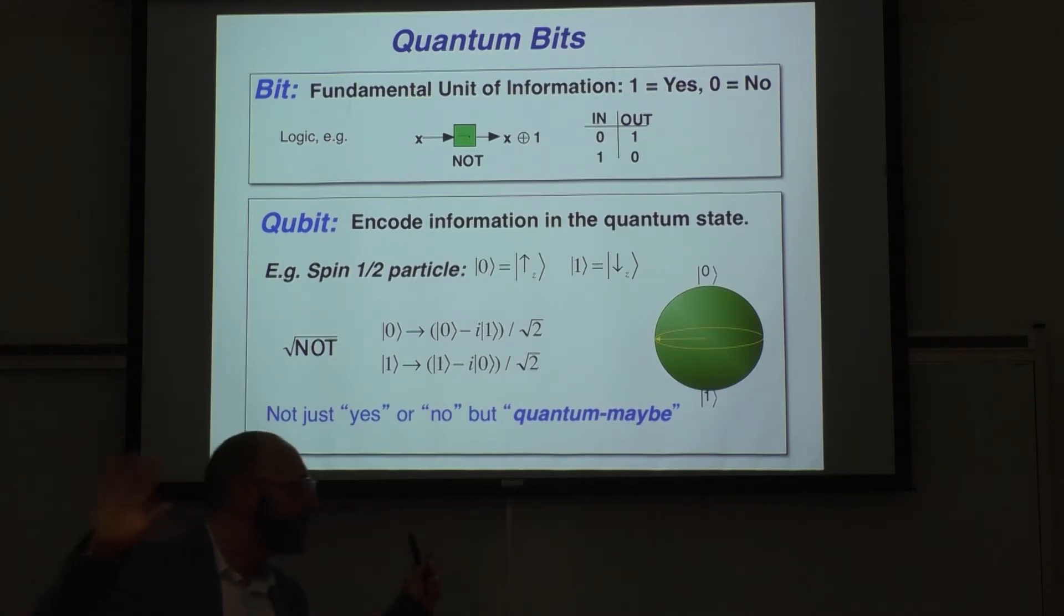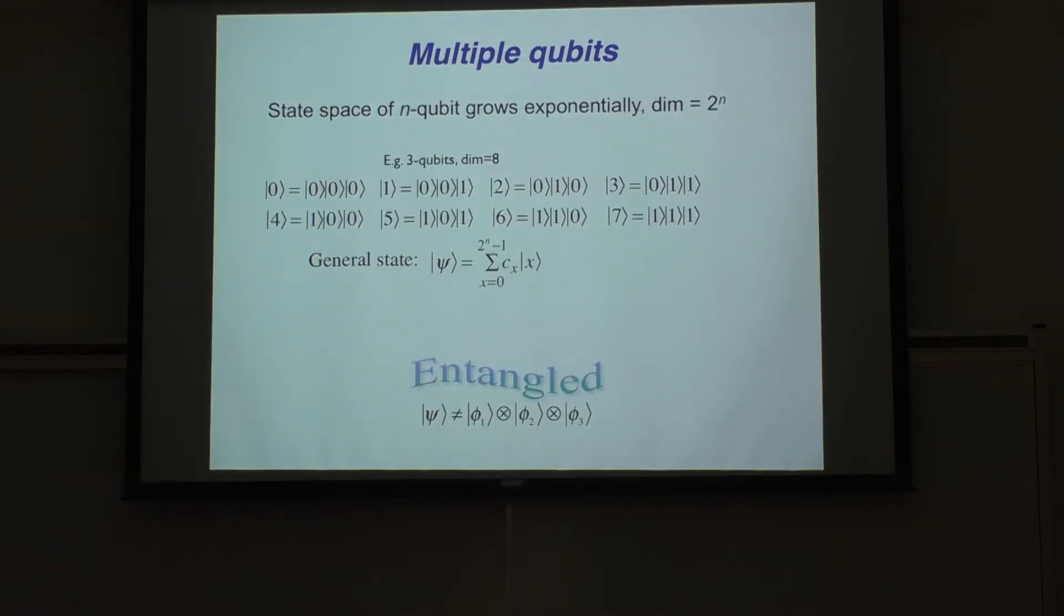But what if I have a bunch of them? Let's say that I have three quantum bits or qubits. Then there are eight different alternatives - up, up, up; up, up, down; et cetera. I can think about this as the binary encoding of zero to seven. But all of these possibilities can exist in superposition. Now I have these eight different alternatives. Such a state in superposition is what we call an entangled state.